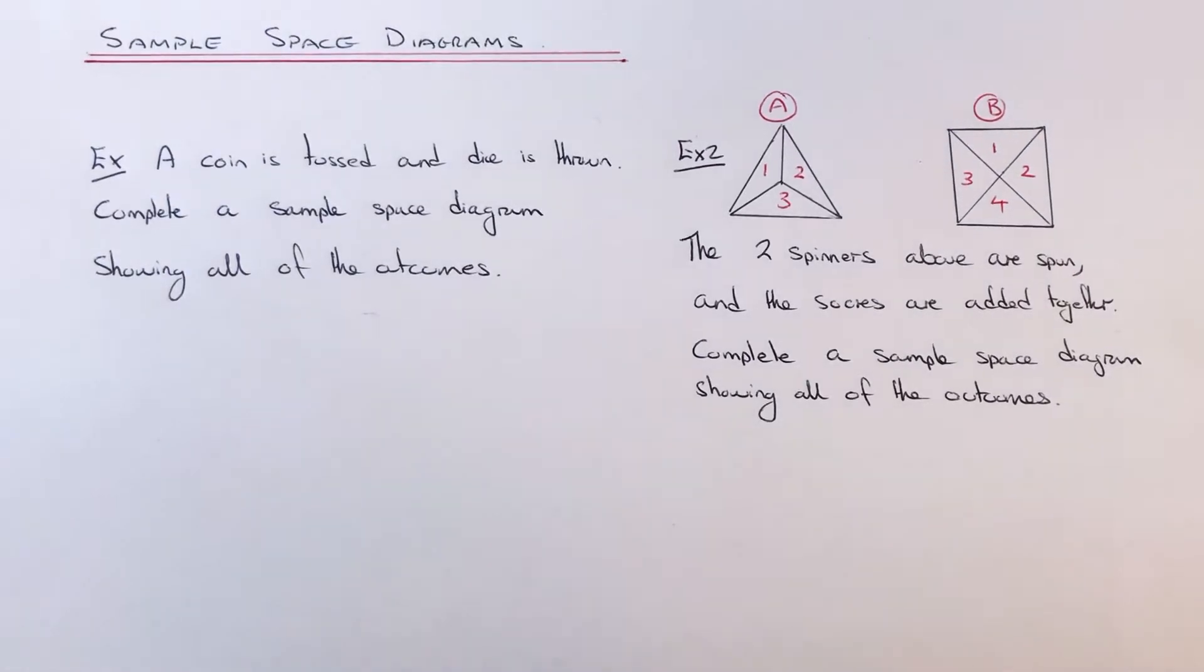Hi guys, welcome back. Today I'm going to show you how to draw up a sample space diagram. This is useful if you need to list outcomes, like if you have two spinners being spun and you need to add scores together, or if you've got two dice being thrown and again you need to add scores together.